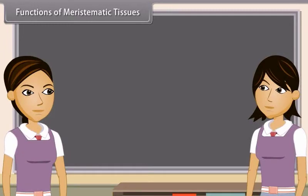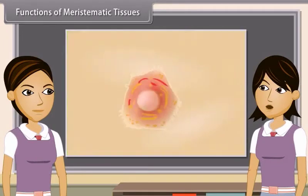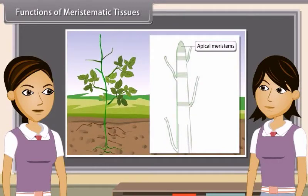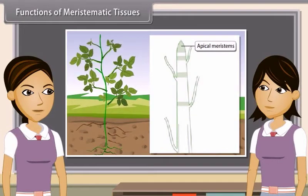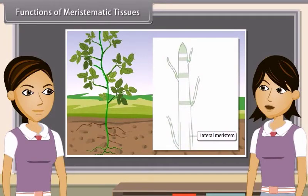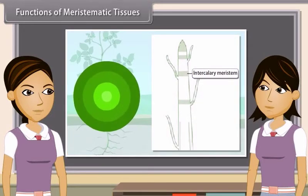The main function of meristematic tissue is formation of new cells continuously. Apical meristem increases the height of the plant due to elongation of the root and stem. It is also called primary growth. Lateral meristem increases diameter of the plant. It is also called secondary growth. Intercalary meristem increases the length of organ.